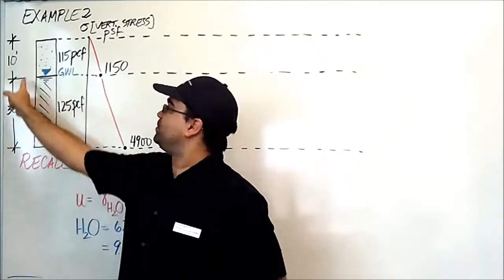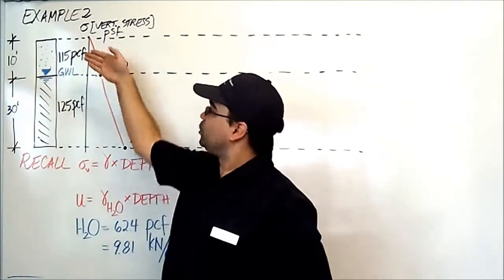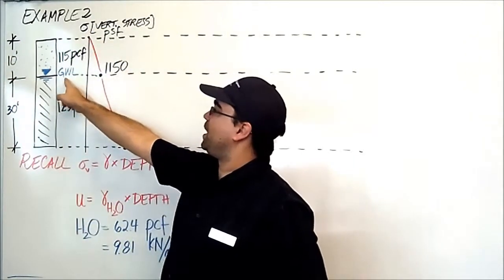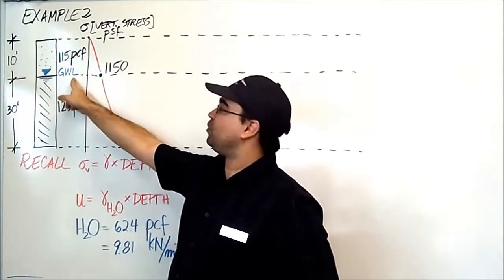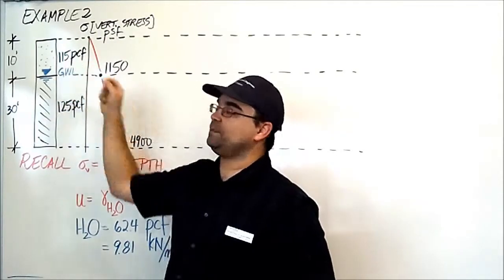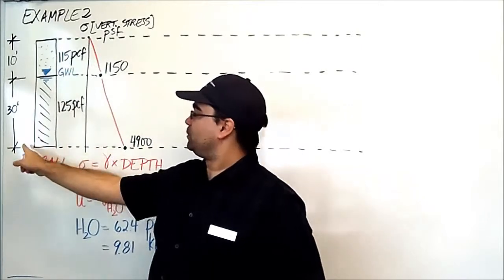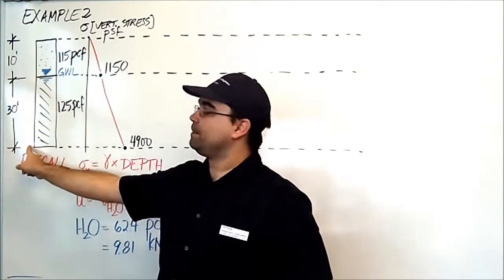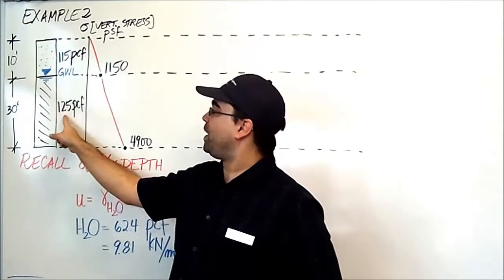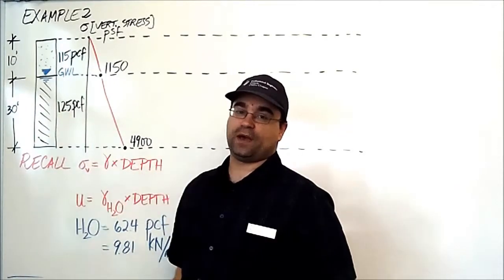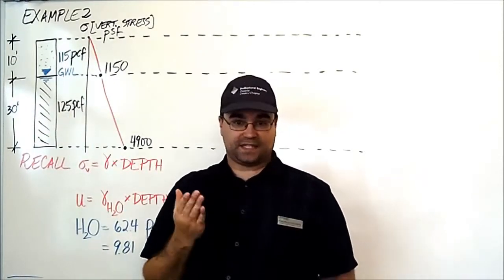Just a quick review of what we're looking at. We have a 40-foot deep borehole where the top 10 feet are above the groundwater level, and that soil has a dry density of 115 pounds per cubic feet. Below the groundwater level, there's a 30-foot deep part of soil that has a wet saturated density of 125 pounds per cubic feet.